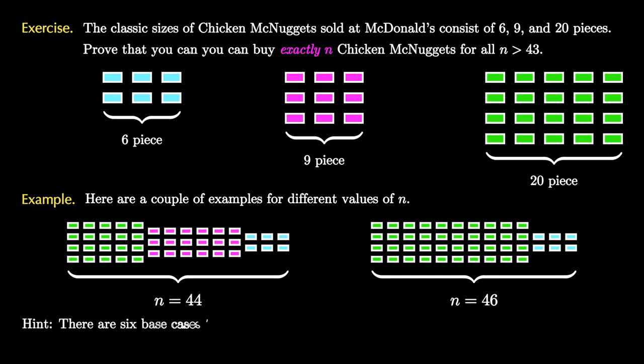As you try to prove this theorem, I'll give you a hint that there are six base cases to consider. Can you see why six base cases will be enough? Here's another hint. Based on what I've shown you already, can you see how to get 50 or 52-piece Chicken McNuggets exactly without much work?